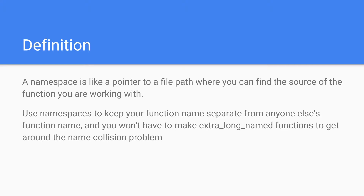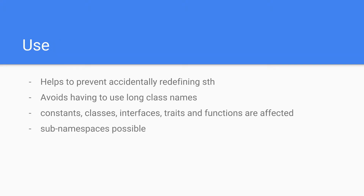You use namespaces to help prevent accidentally redefining something like a class that already exists, and to avoid having long class names. Constants, classes, interfaces, traits, and functions are all affected, and you can also put sub-namespaces.